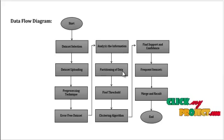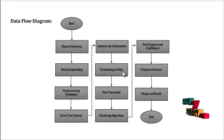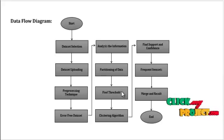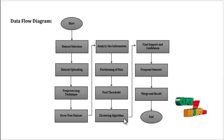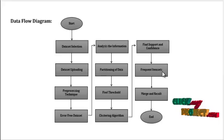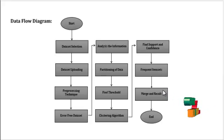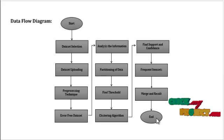Then partitioning of the data is carried out for frequent item mining. The entire data is partitioned in an attribute-wise manner. Then the threshold value is determined for frequent mining. A clustering algorithm is used for retrieving data from the entire database. Then support and frequency levels are found, frequent item sets are enlarged, and finally merging and results are calculated.